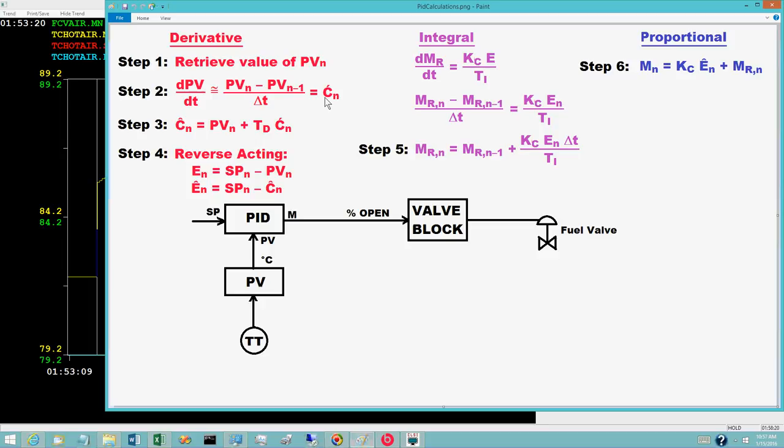Step 2 computes the rate of change C prime sub n for the PV. The simplest approach is a finite difference approximation. DPV dt is approximately equal to PV sub n minus PV sub n minus 1 divided by delta t. The result being C prime sub n. In practice, this simple approach is not satisfactory. A subsequent video will explain why and present a preferable approach.